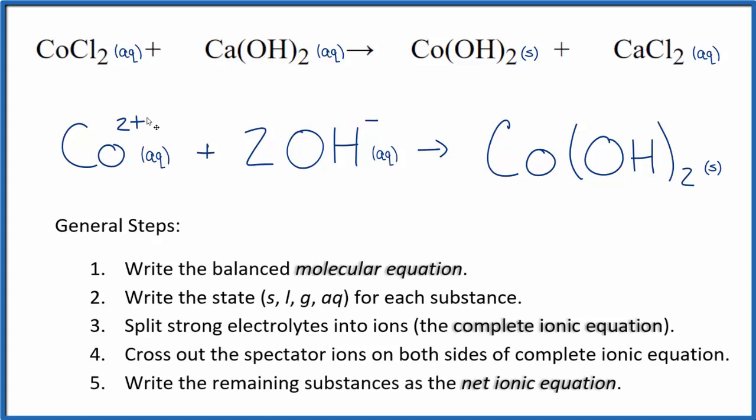You'll note charge is conserved. We have a 2 plus here. 2 times 1 minus, that's 2 minus. So that adds up net charge of zero. This is neutral net charge of zero. If we count the atoms up, they're balanced as well.